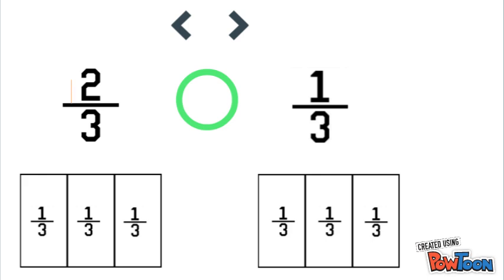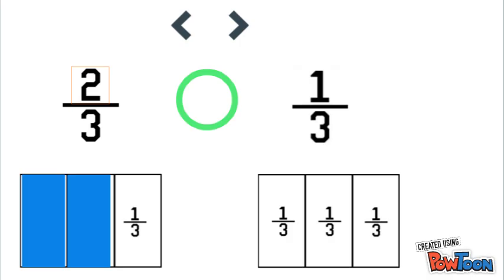Now, two thirds has a numerator of two, so we're going to shade in two of our thirds. One third has a numerator of one, so we'll shade in one of our thirds.